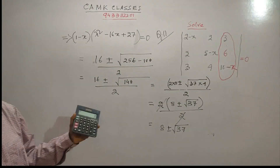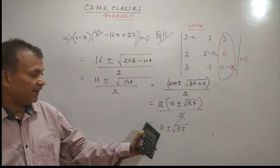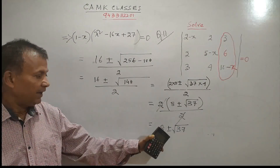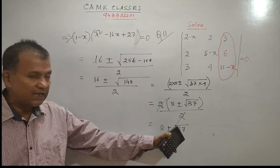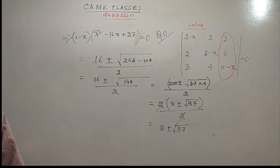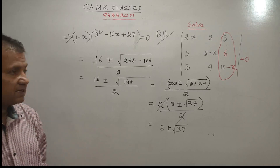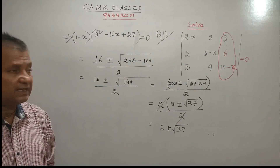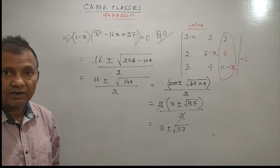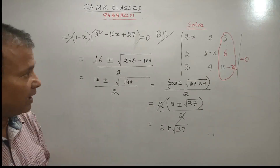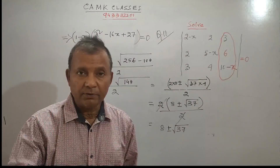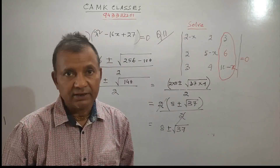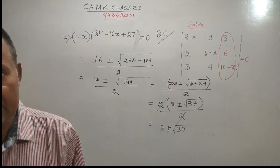So there are three values of x: x = 1, x = 8 plus √37, and x = 8 minus √37. We have done this problem very step-by-step without missing anything. I hope you have all understood. If you like this video, please subscribe and offer your comments. Thank you, see you in the next class.